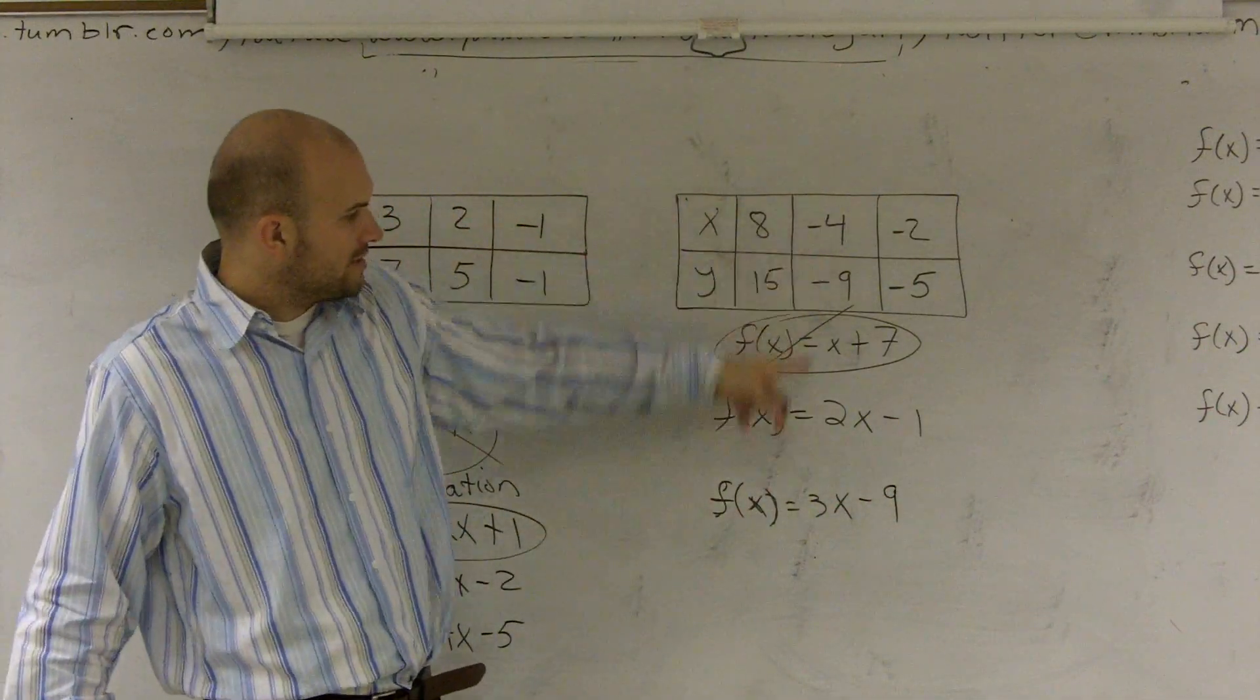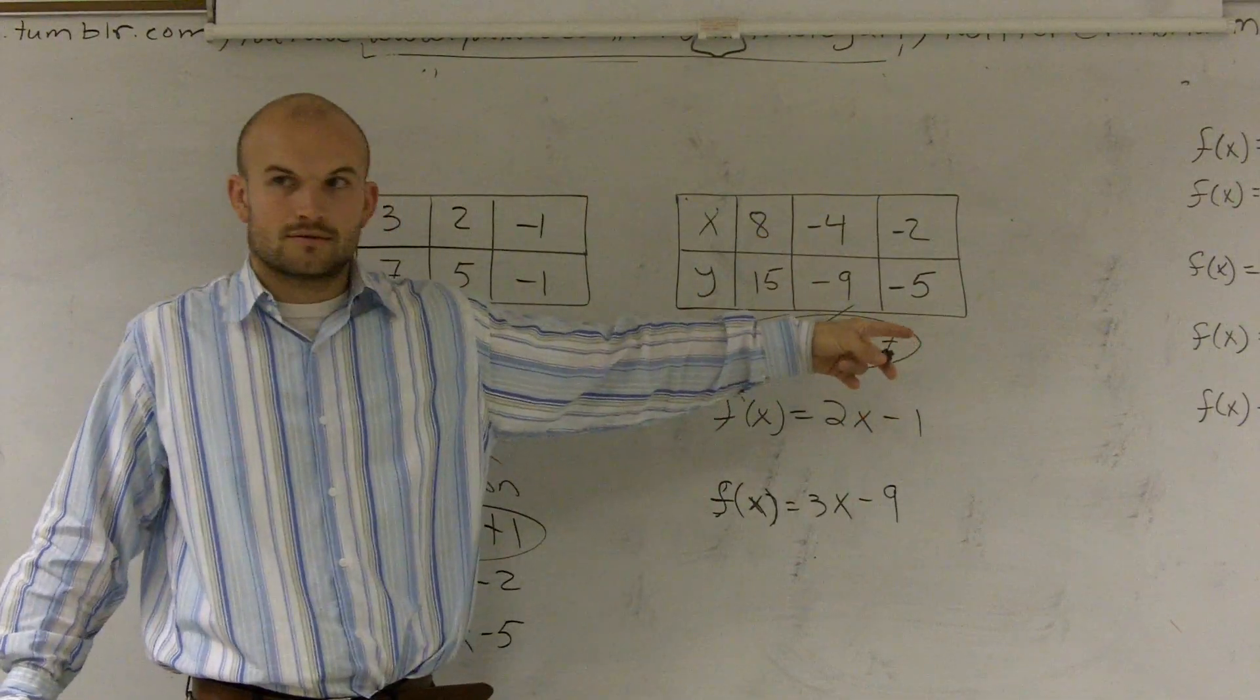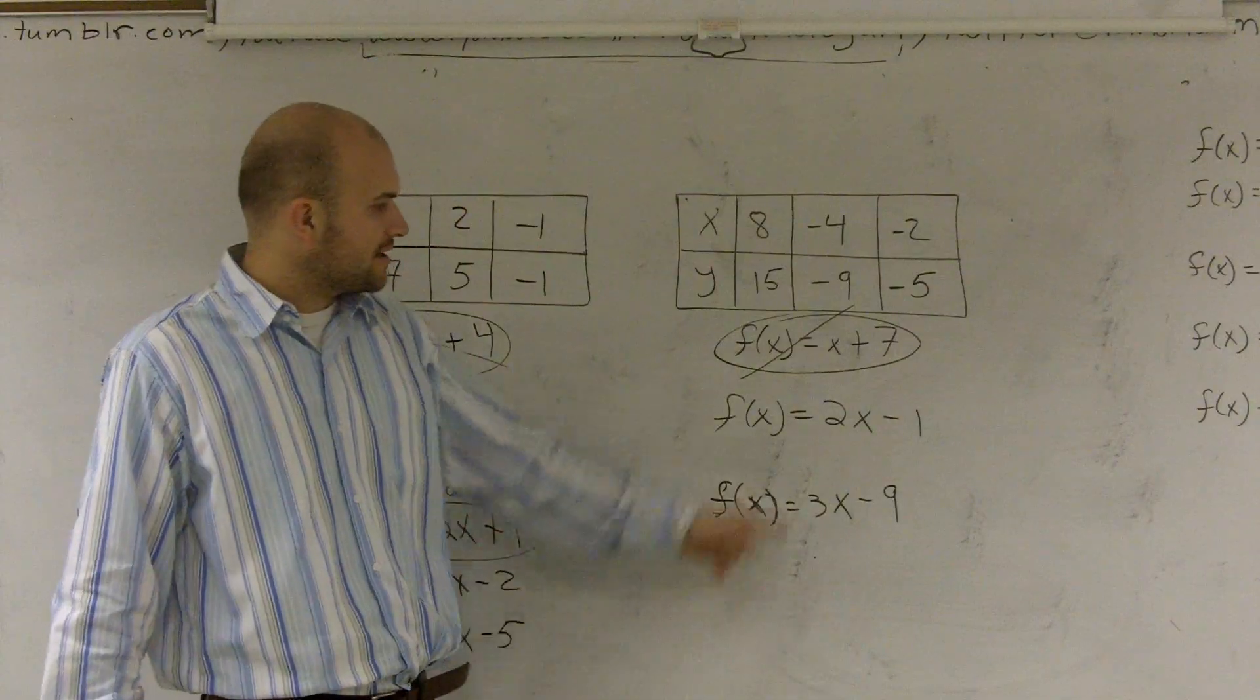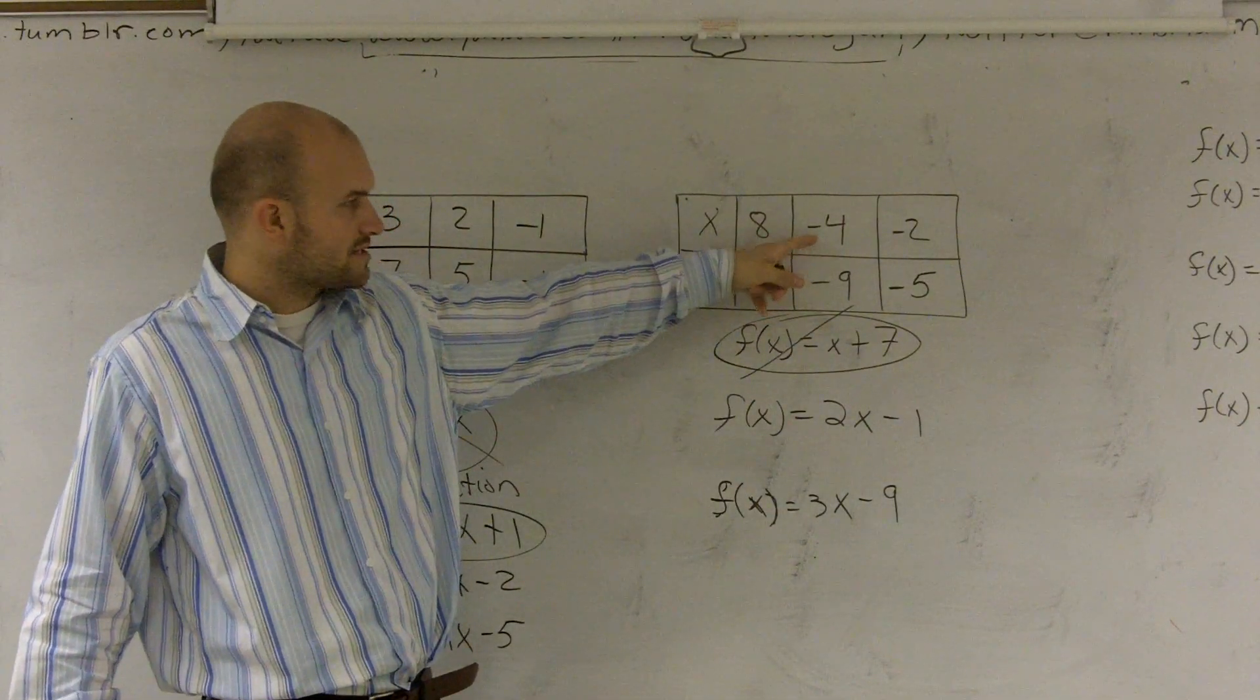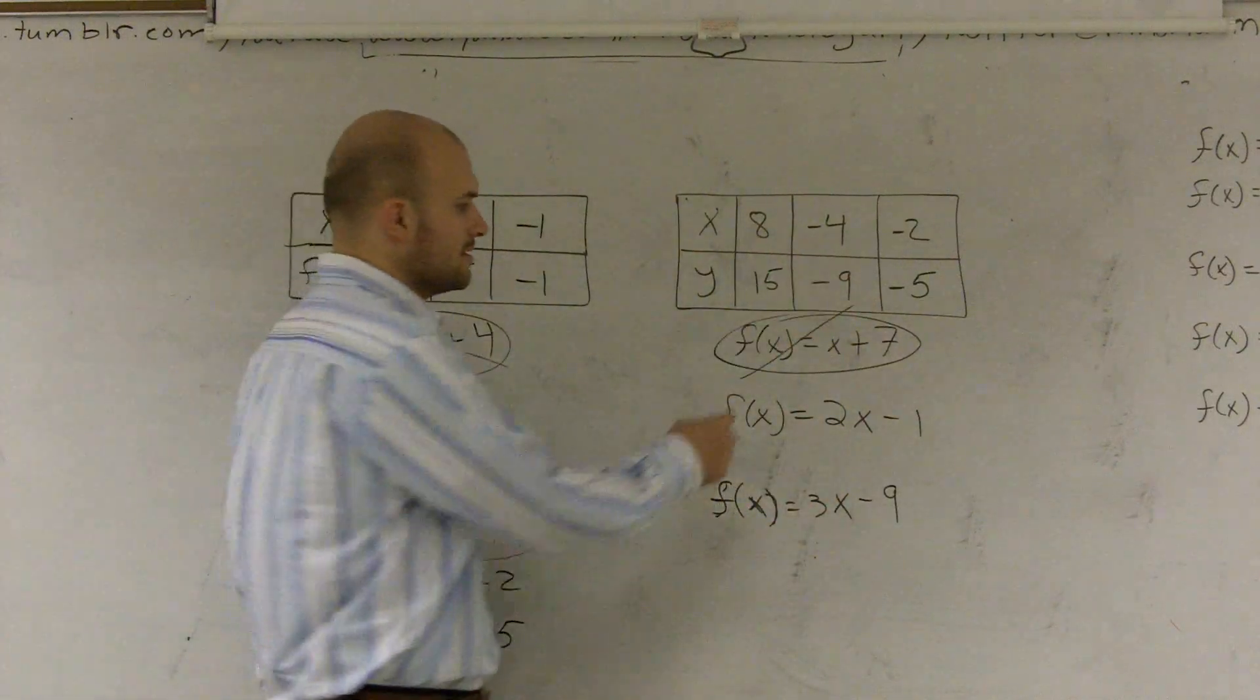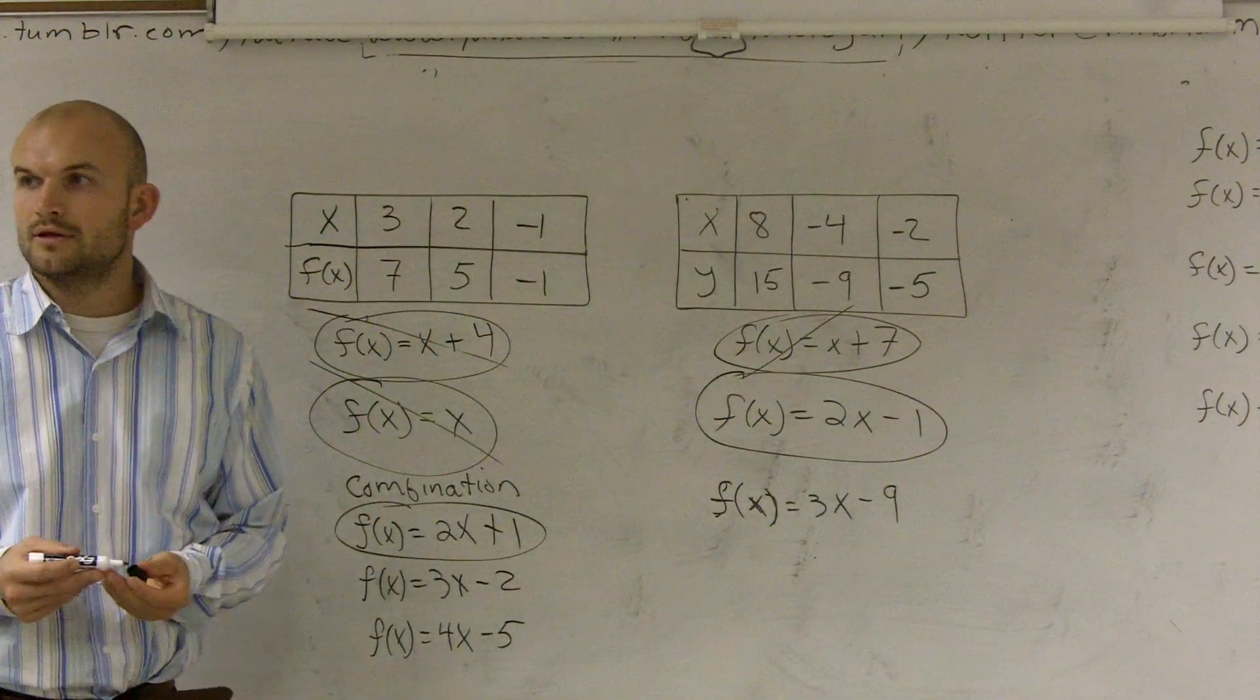So which one works for this one? Let's do 2 times negative 4 is negative 8, minus 1 is negative 9. And this one is 3x minus 9, so that works for this one. But 3 times negative 4 is negative 12, minus 9 is negative 21. So it doesn't work for this one. So this function is f of x equals 2x minus 1. Everybody see it?